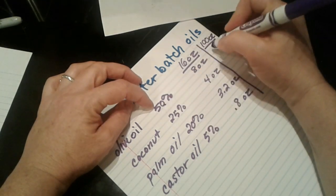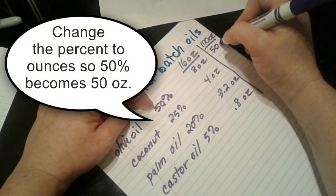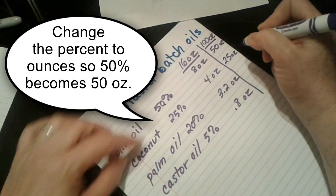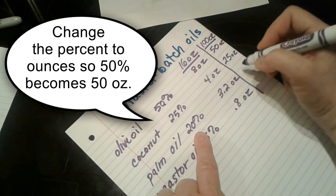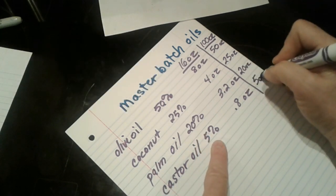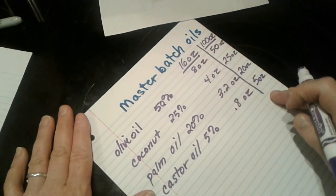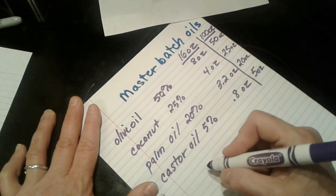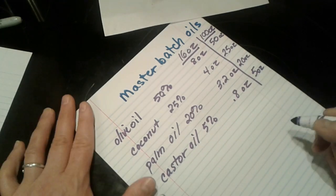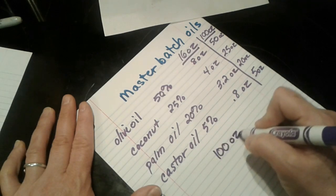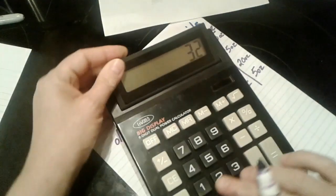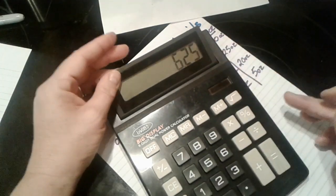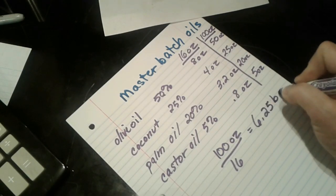To do 100 ounces, all you have to do is make 50 ounces of olive oil, 25 ounces of coconut oil, 20 ounces of palm oil, and 5 ounces of castor oil. This gives you 100 ounces of your oils ready to use. Whenever you need to make a batch of soap, just pour off 16 ounces. 100 divided by 16 gives you 6.25 batches.